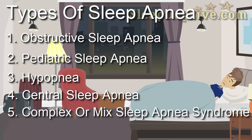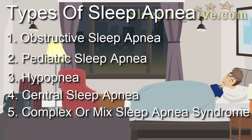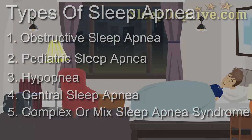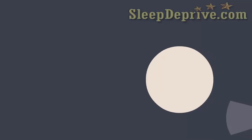The fifth type is complex or mixed sleep apnea syndrome. This is the type of disorder in which people suffer from both obstructive sleep apnea and central sleep apnea. The victims tend to have effects of both sleep apnea issues. So those were the types of sleep apneas.